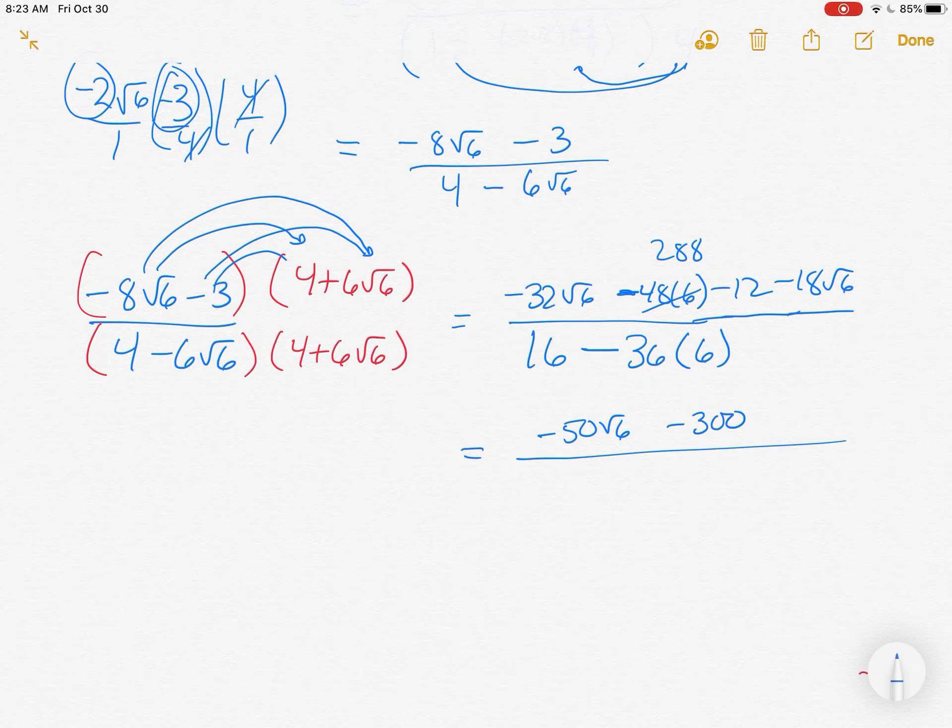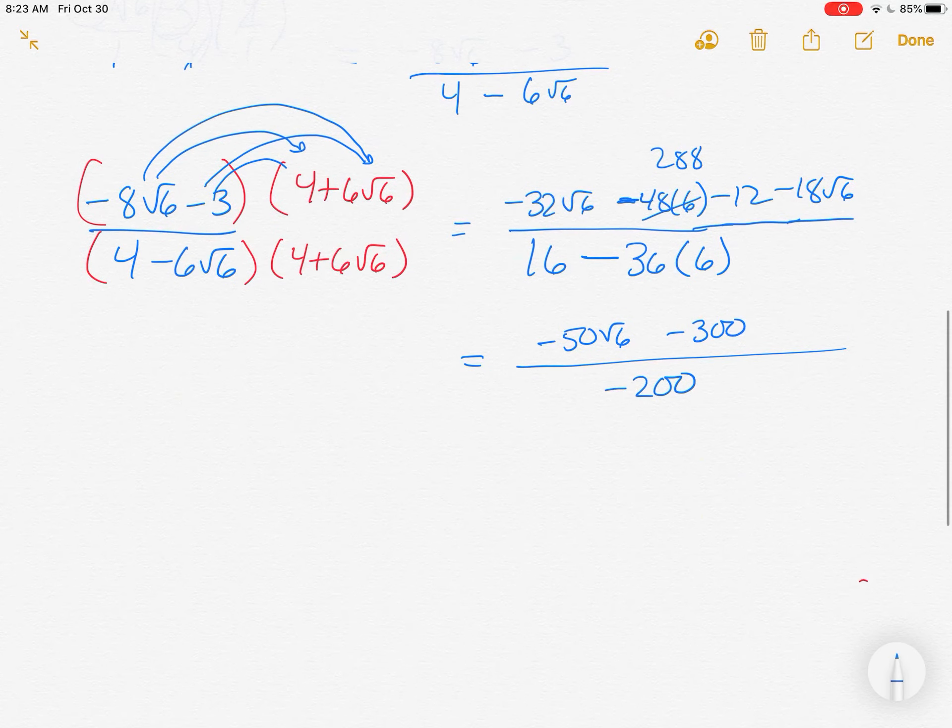On the bottom, 16 minus 36 times 6 is actually working out to be negative 200. Notice that everything is negative. They're going to pull that out. They're going to essentially factor out the negative ones and cancel them. So I'm going to change this to 50 root 6 plus 300 divided by 200, because you have a negative divided by a negative, so that's going to be positive. Everybody's positive.